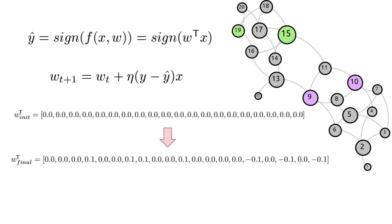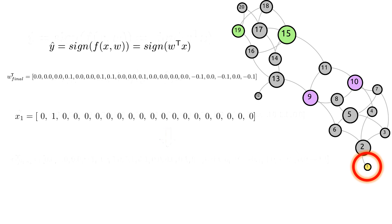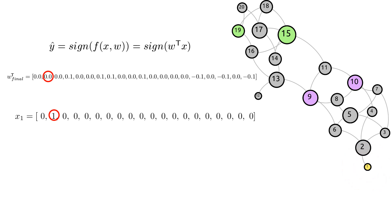Larger the magnitude, the more confidence we have that the node having connections to it will have the same label. However, for nodes like n1, we are still clueless, as it has only a connection to n2 which carries no weight.